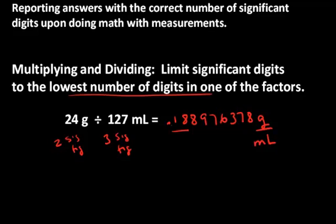And since the digit following the two sig figs is greater than five, I'm going to have to round up. So to correctly report this measurement, this value, this density, it's going to be .19 grams per milliliter.